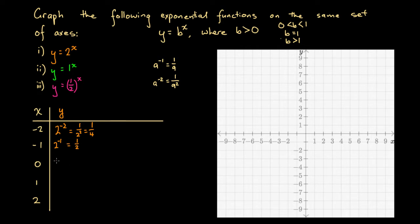At x equals 0, we get 2 to the power of 0. By our indice laws, a to the power of 0 equals 1, so this gives us 1. At x equals 1, we get 2 to the power of 1, which is just 2. And at x equals 2, we get 2 to the power of 2, which is 4.